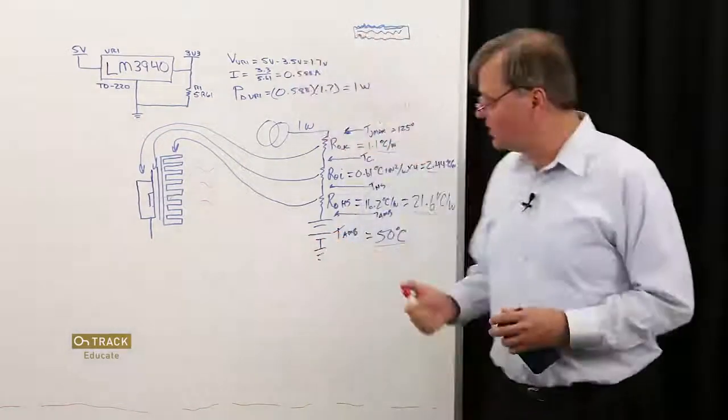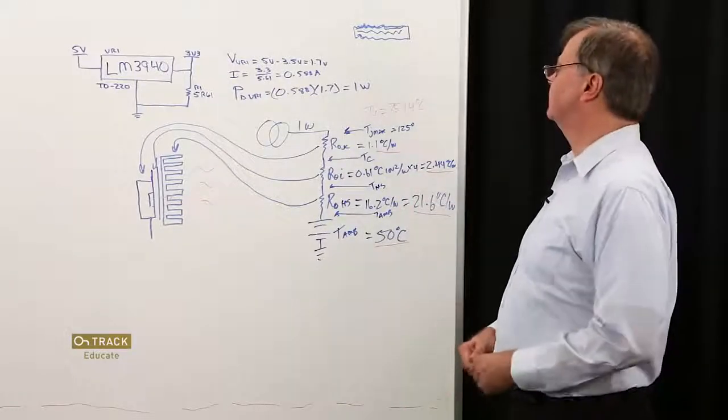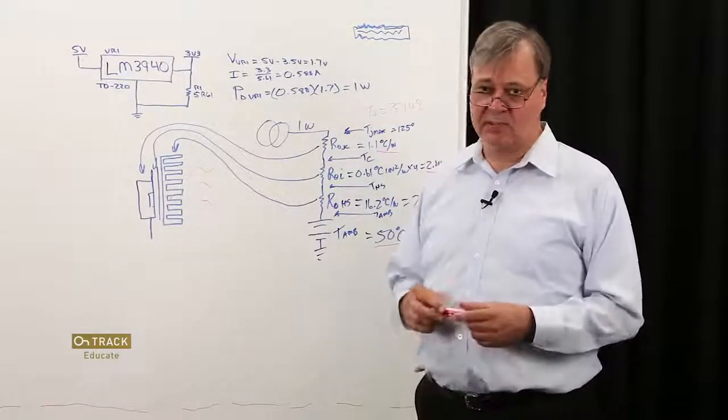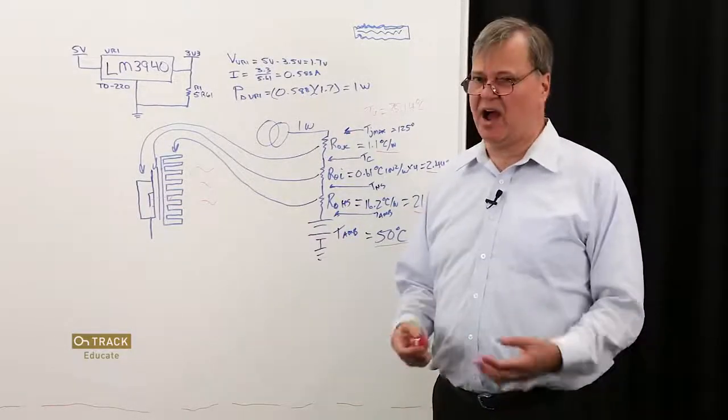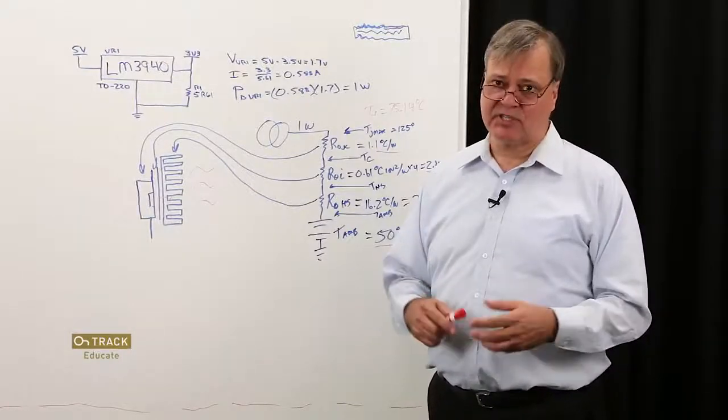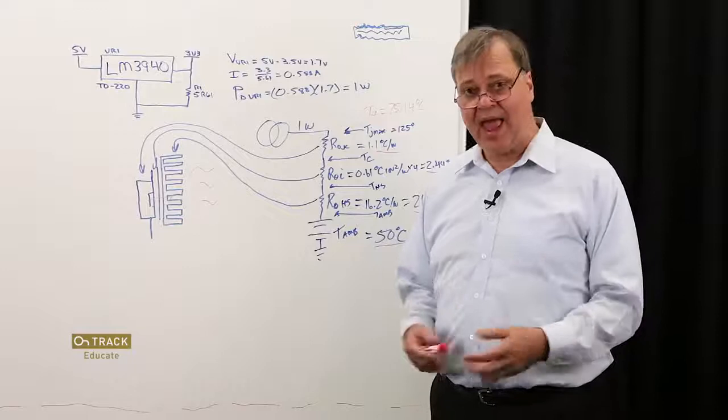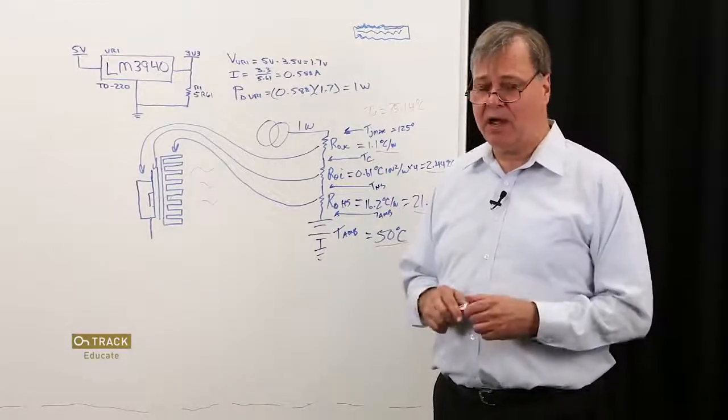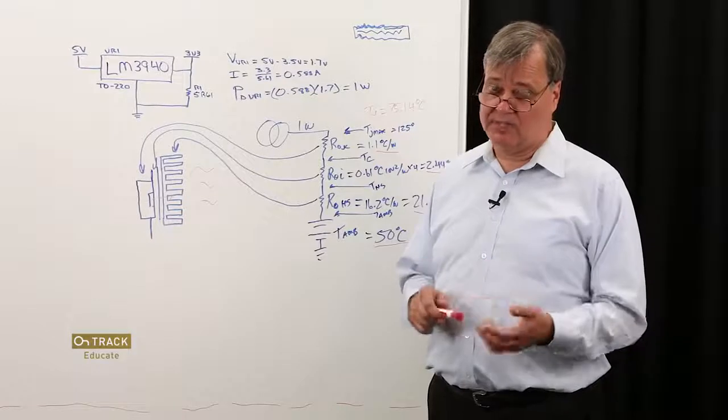You'll notice that that's well away from our maximum junction temperature. In fact, we're running at roughly 60% of our absolute maximum temperature. It's a pretty good operating point. But, it begs the question, what's the right operating point? Well, that's a judgment call. In some applications, you'll have a specification on your thermal de-rating of all of the components in your design. If you don't have that, then you kind of have to make a judgment call, keeping in mind that the reliability of an electronic product goes down with the square of the temperature.